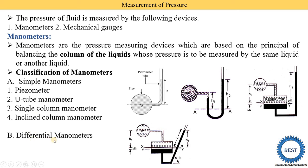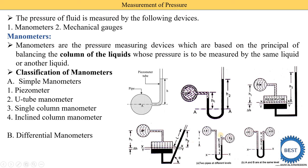The second category is the differential manometer, which is used to measure the difference in pressure between two points. In the diagram, point A and point B represent two pipes at different levels. The pressure difference between point A and point B is directly measured using the differential manometer.